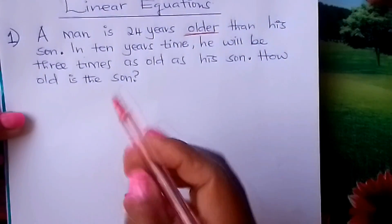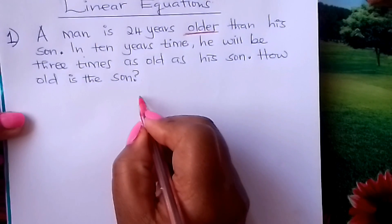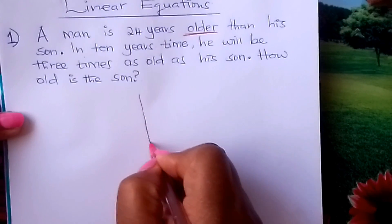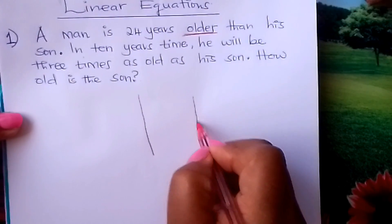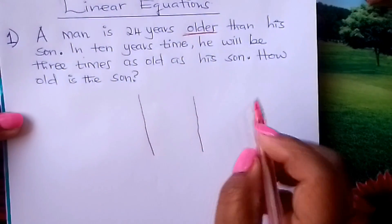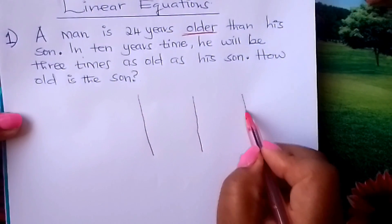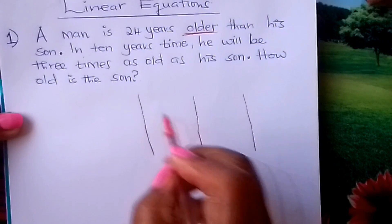How do we go about this? You come and make two columns like this — two columns.